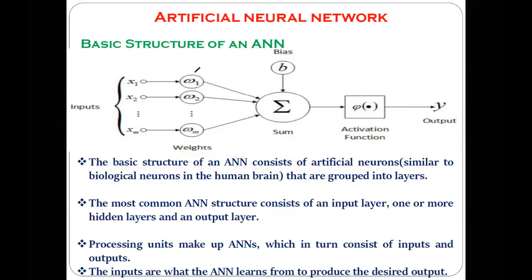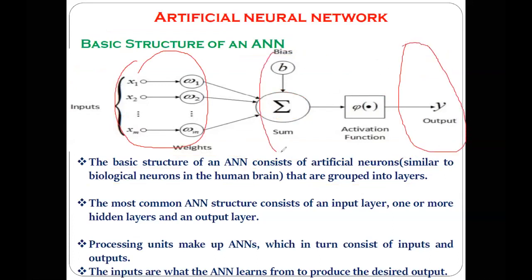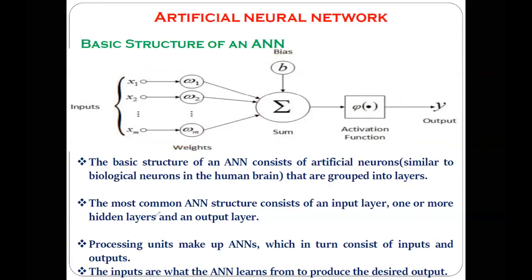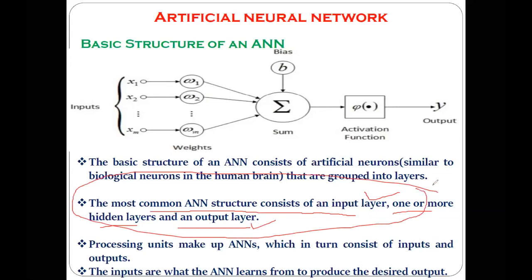The input part and the output part are observable in this structure. These neurons are also divided into different layers, which we will see in the types of ANN. This particular part can be considered as an input layer, and this particular part can also be referred to as an output layer. The most common artificial neural network structure consists of different input layers, one or more hidden layers, and output layers.